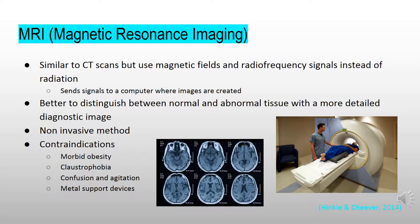Contraindications for MRI include morbid obesity, claustrophobia, confusion and agitation, and having implanted metal or metal support devices that are considered unsafe, including old tattoos which may contain trace elements.